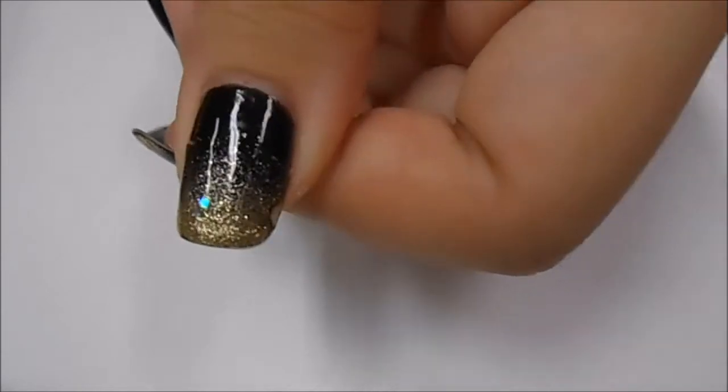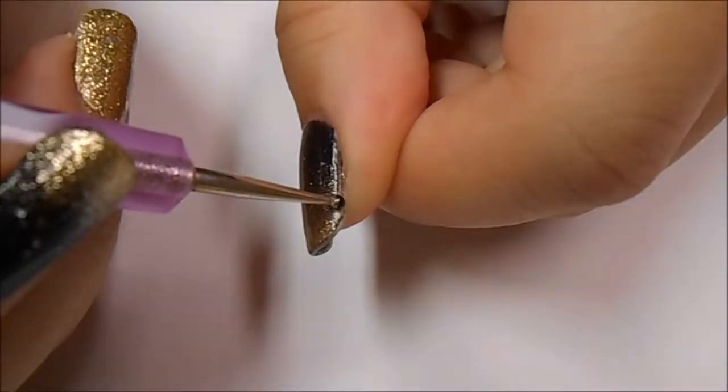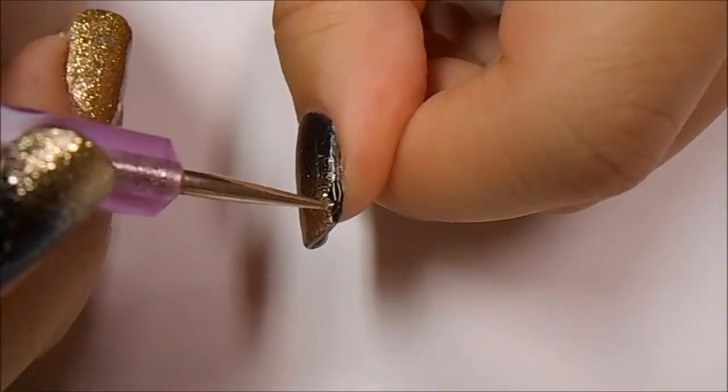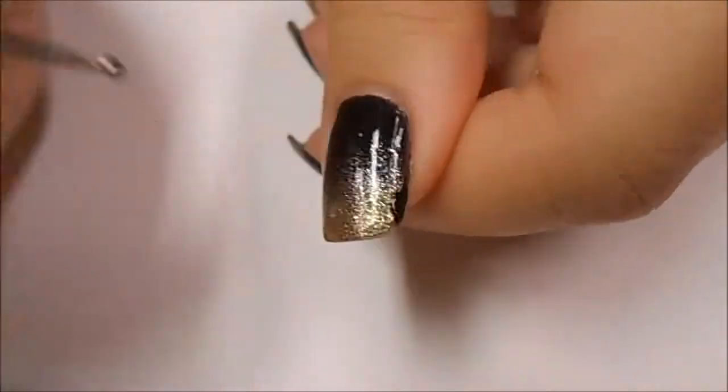So now I'm just showing you where it's worn down, and I'm going to take a dotting tool dipped into the same color as my base, which was black, and I'm going to dot it into the empty spaces.